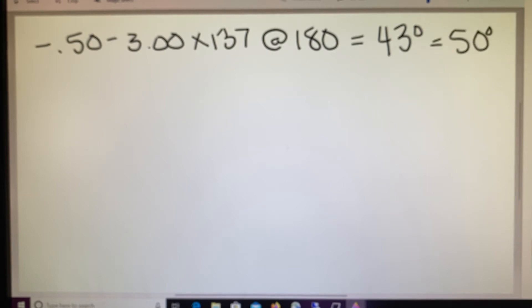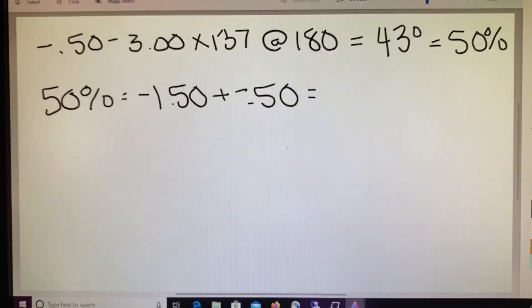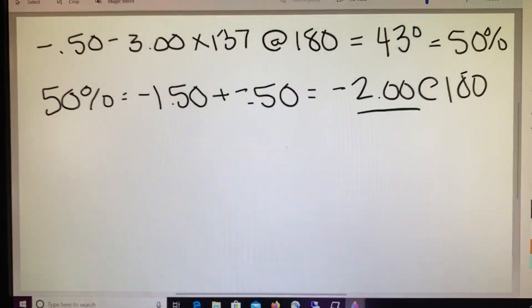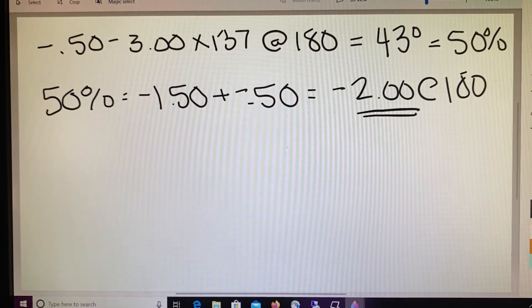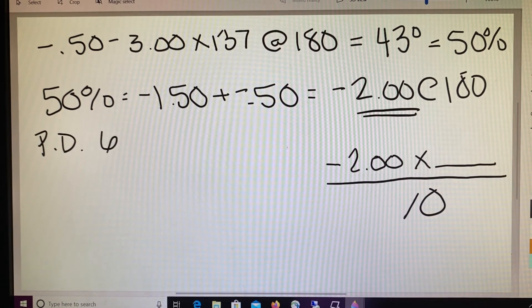Therefore we are going to be using 50% of our cylinder. When we determine that 50% of the cylinder to be a minus 1.50, now we know how much cylinder we need to add to the sphere. So we have our minus 1.50 combined with our minus a half to equal a power of minus 2 at 180. So here's the power that we're going to plug into our Prentice Rule. Let's write that over here. So minus 2 times decentration divided by 10. Now if we look back to our example, we see that the patient's PD was taken and ordered at 68 millimeters.